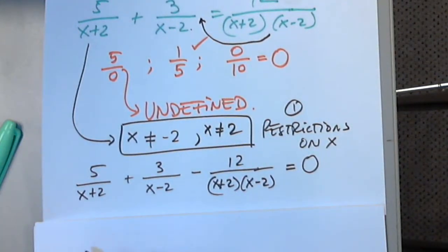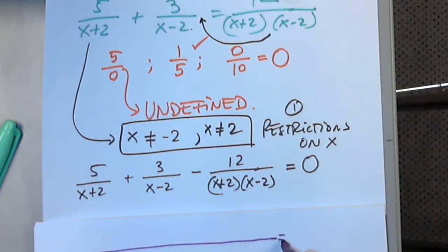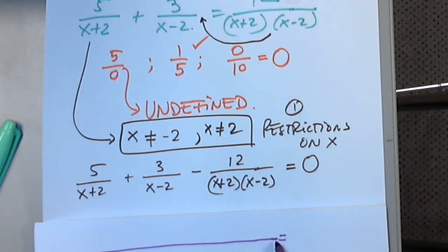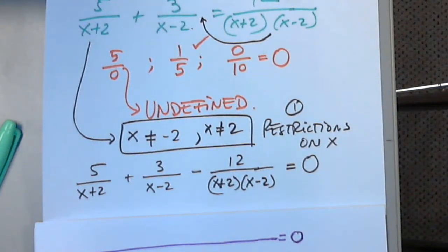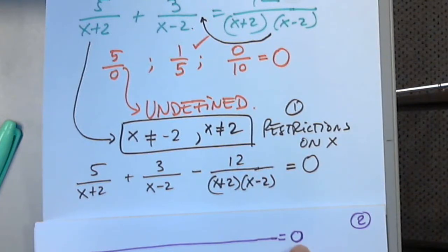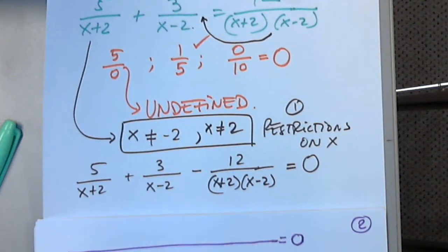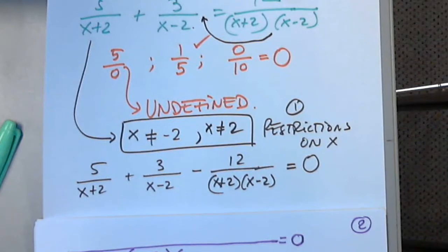Now I need to find the least common denominator. All different factors must be in the LCD. I draw a long fraction line, copy the equal symbol, and write zero — because if I forget this and continue to simplify, I'll turn the equation into an expression and never solve it.